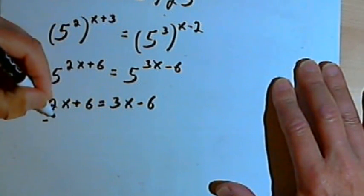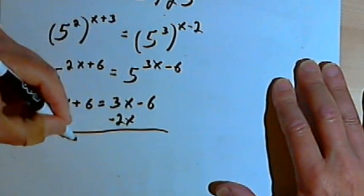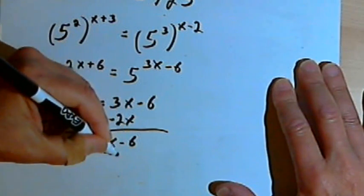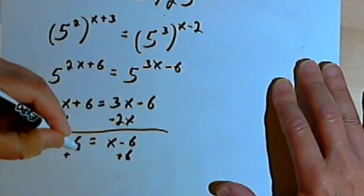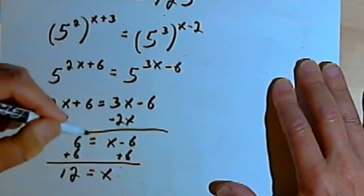Now all I have to do is subtract 2x from both sides. So I've got 6 equals x minus 6. I'll add 6 to both sides. And I'm going to get x equals 12.